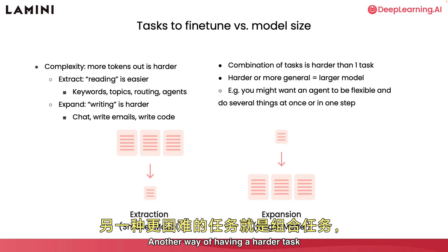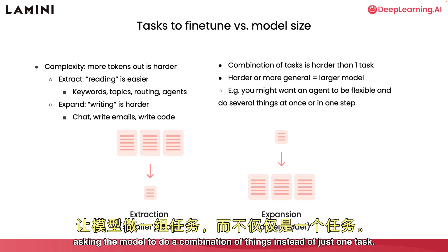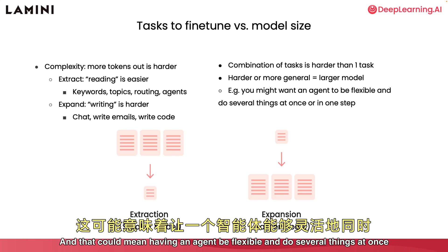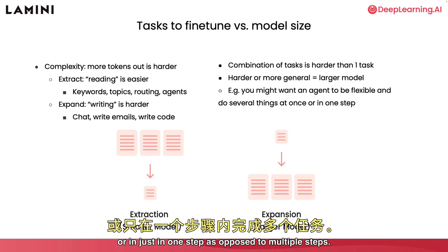Another way of having a harder task is having a combination of tasks — asking the model to do several things at once instead of just one. That could mean having an agent be flexible and do several things in one step as opposed to multiple steps.